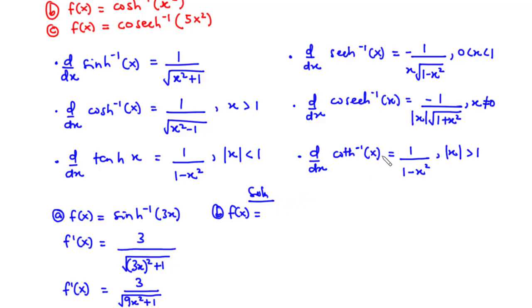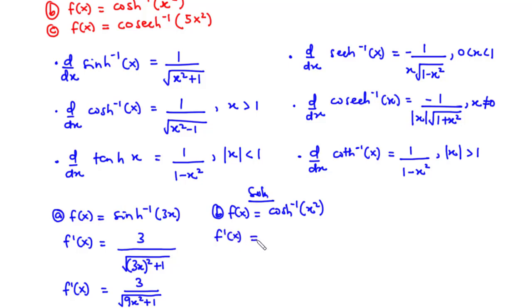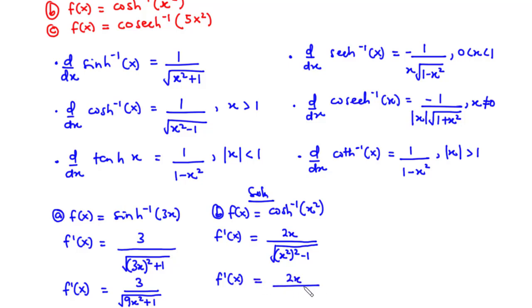Now let's move on to B. We have f(x) = cosh⁻¹(x²). So we differentiate x², giving 2x, and we have that divided by — focusing on the cosh⁻¹ equation — the square root of x² - 1, but we substitute x² in place of x. So that gives the square root of (x²)² - 1, which is the square root of x⁴ - 1. Therefore, f prime of x = 2x divided by the square root of x⁴ - 1.